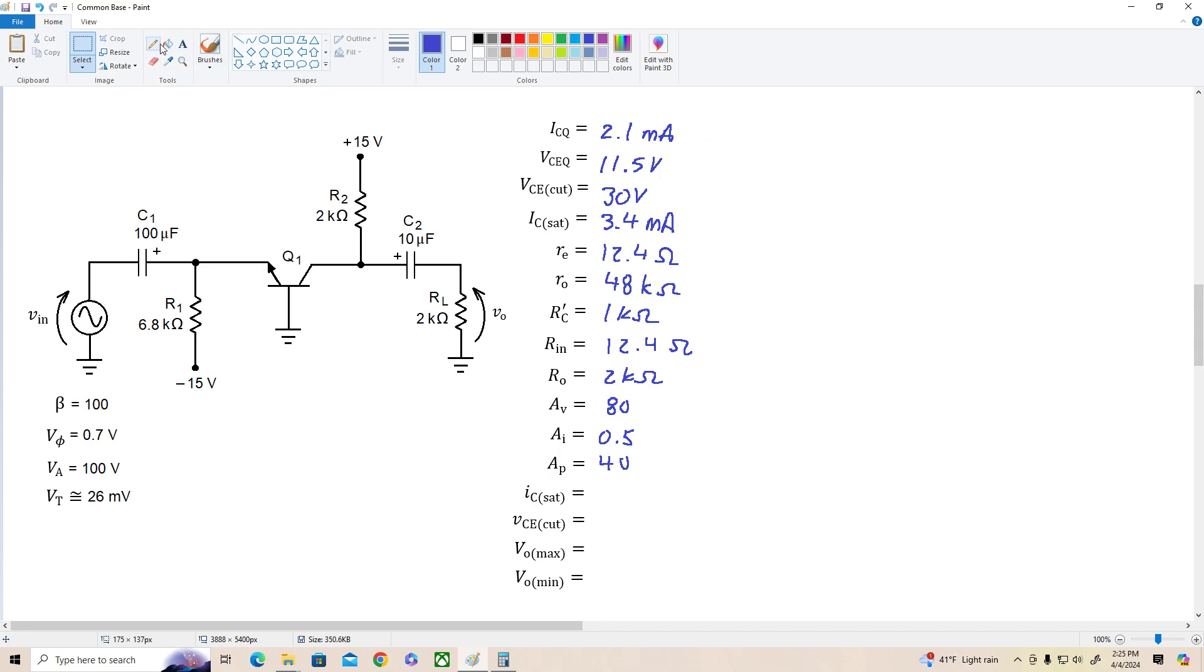Now we're going to use the same equations we did before. That is IC in saturation is equal to ICQ plus VCEQ divided by R prime C. So let's plug in our numbers and see what we get here. ICQ was 2.1 milliamps plus VCEQ 11.5 volts divided by R prime C of 1,000 ohms. So that's 2.1 milliamps plus VCEQ 11.5 milliamps. So that's 11, 12, 13.6 milliamps. There's our IC sat.